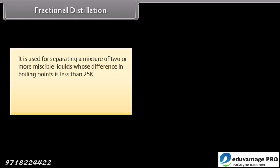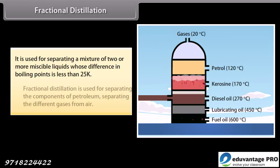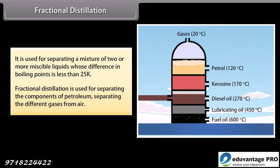Fractional distillation: It is used for separating a mixture of two or more miscible liquids whose difference in boiling points is less than 25K. Fractional distillation is used for separating the components of petroleum, separating different gases from air, etc.